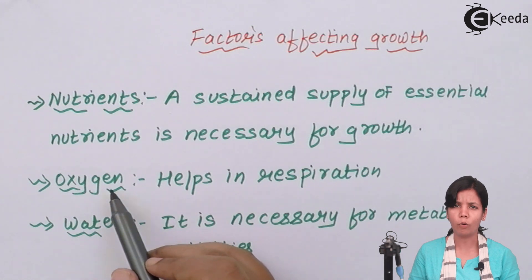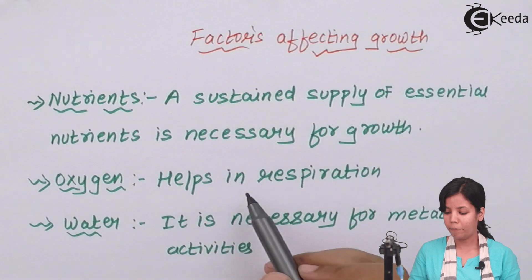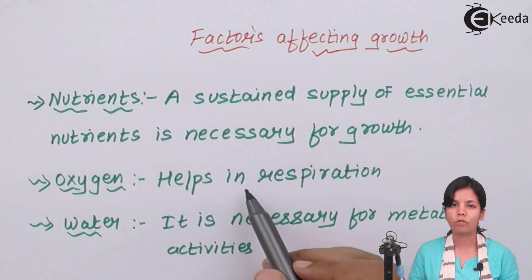Next is oxygen or O2. You all need oxygen to respire. Similarly plants respire with help of oxygen or photosynthesis. Yes, the process to prepare plant food is dependent on oxygen children.